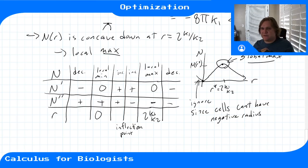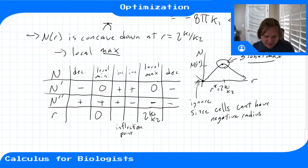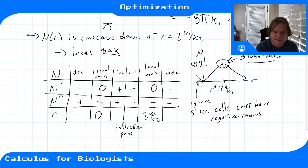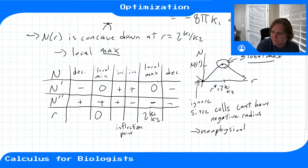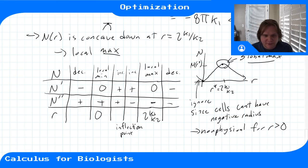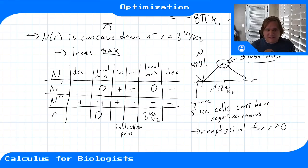This is often the case for applied problems: even without an explicit bounded domain, there's typically only one maximum, and everywhere else is decreasing away from it or unphysical. The left side of r = 0 is non-physical — it doesn't make sense to talk about nutrient absorption and consumption of a cell with a negative radius. So the optimal cell radius that maximizes net nutrient increase is r = 2k1/k2.